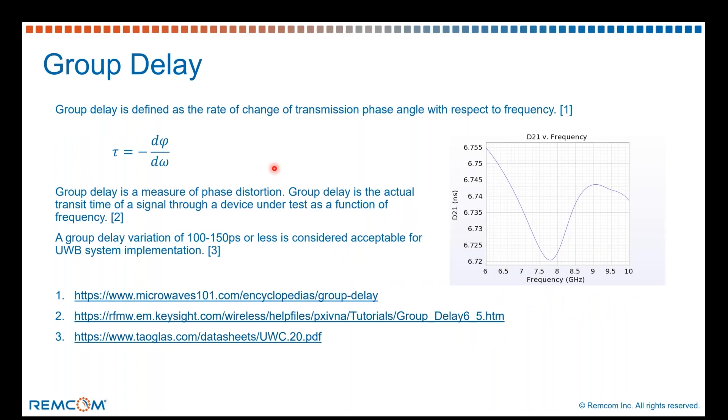Thinking about a traditional two-port group delay, it's defined as the rate of change of transmission phase angle with respect to frequency. And here's the corresponding equation.